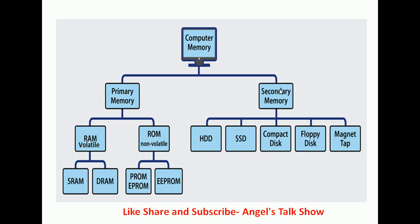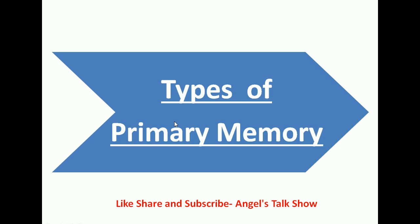In secondary memory we have different types of memories: HDD (Hard Disk Drive), SSD (Solid State Disk), Compact Disk, Floppy Disk, and Magnetic Tape. In this video we will cover only primary memory and its types. Secondary memory will be discussed in our next video. So let's start with primary memory and discuss RAM and ROM and their types.